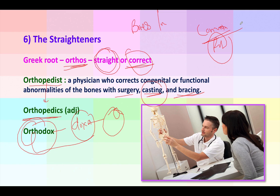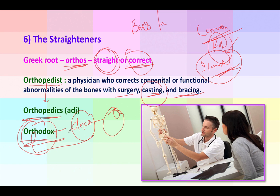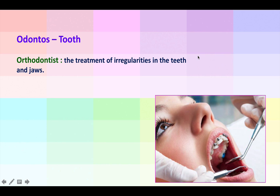An iconoclast is the opposite — a person who does not conform to already established beliefs in society and tries to break those beliefs and create something new. So an orthodox or conventional person cannot be an iconoclast. These are two completely different types of thinkers.